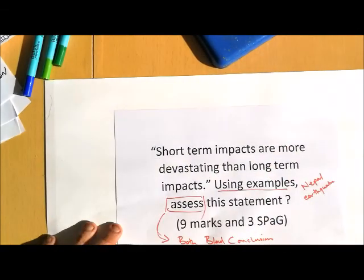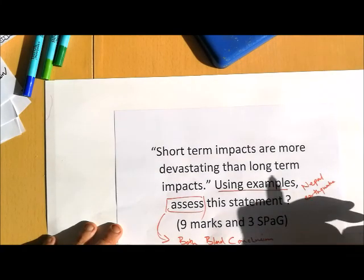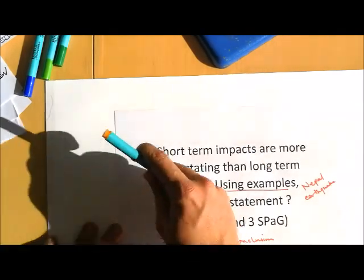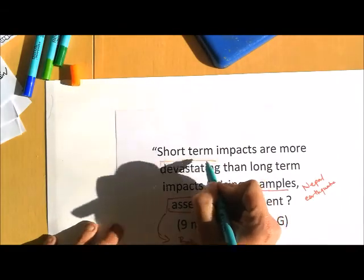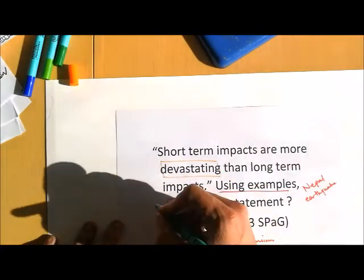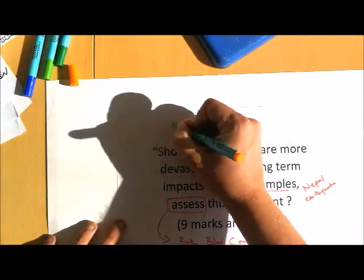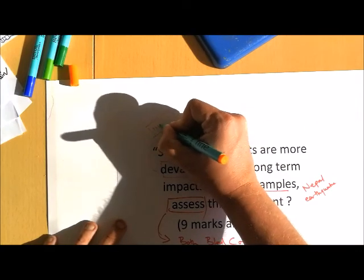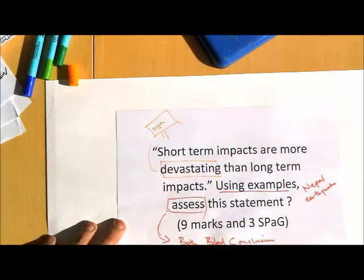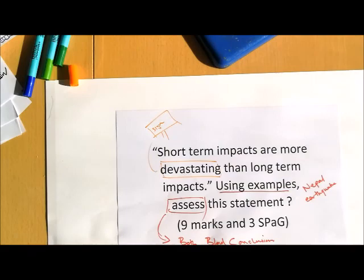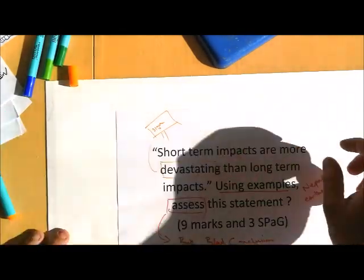We've talked before about this idea of signposting words. And this is a really clear signposting word here: devastating. If we can use that word in our question or some kind of derivative of it, like the devastation, then it's going to show the examiner that we're actually relating to what the question's asking us. And so we've got two sides of the argument.